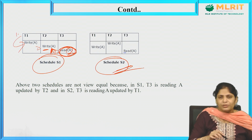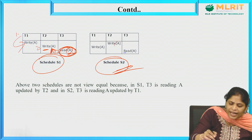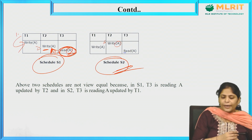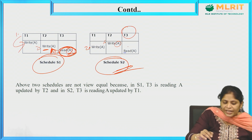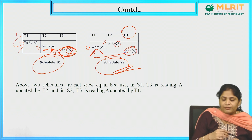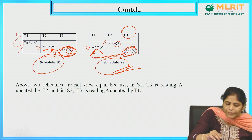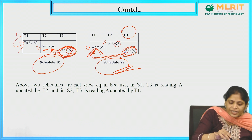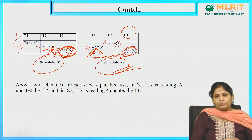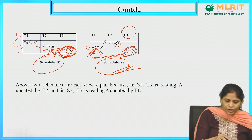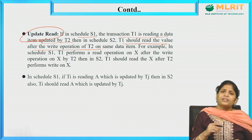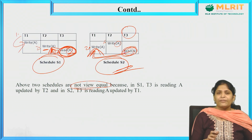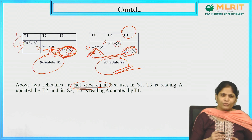In schedule S2, data item A is first updated by T2, then updated by T1 again, and T3 is reading the data which was updated by T1. But in S1, T3 was reading data updated by T2. Since T3 reads data updated by different transactions in S1 and S2, the update read condition is not satisfied. Therefore, the two schedules are not view equivalent and hence not view serializable.